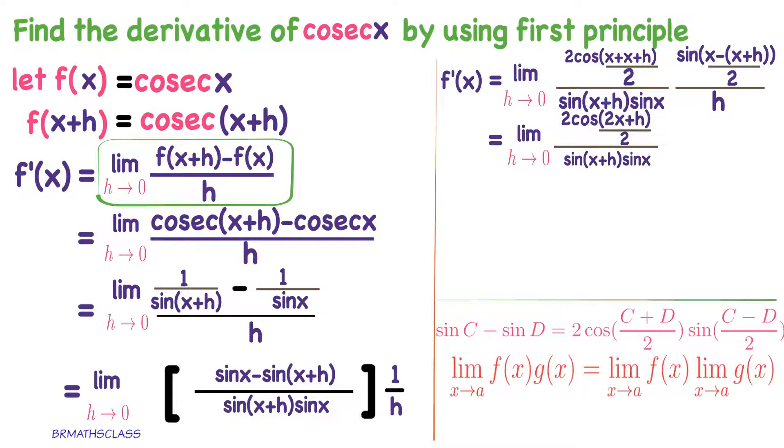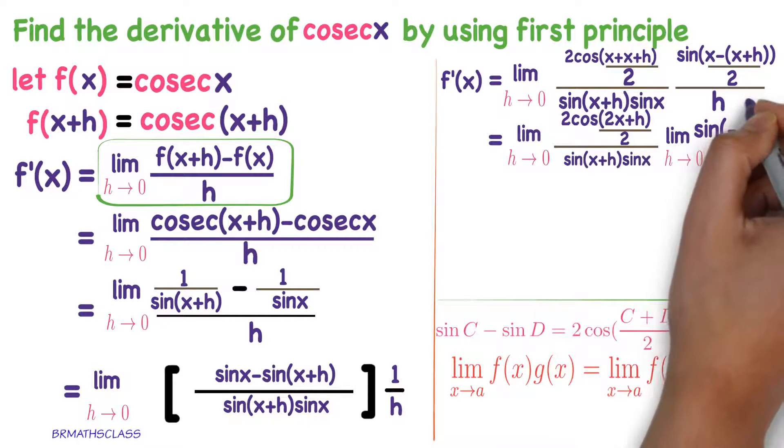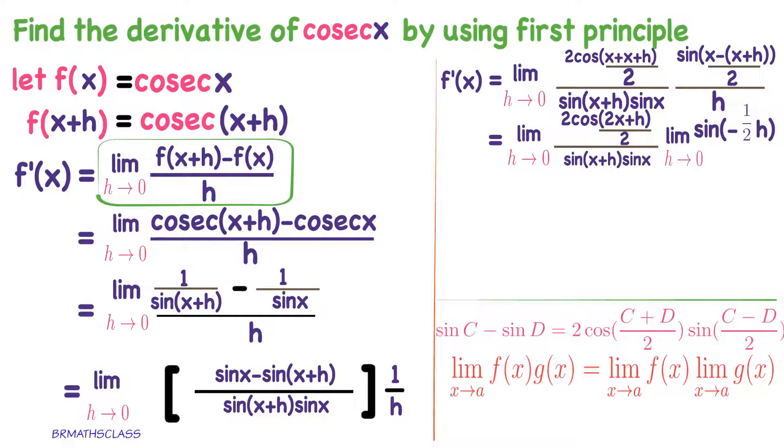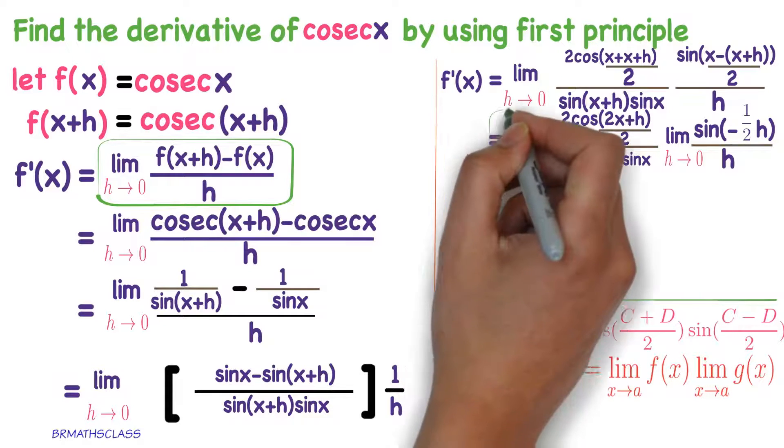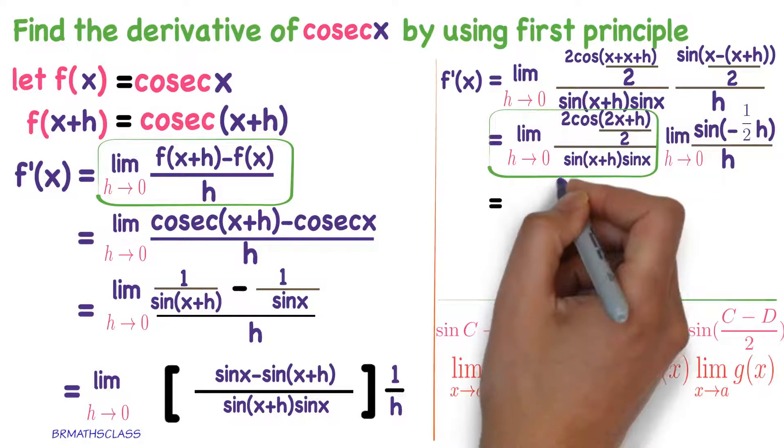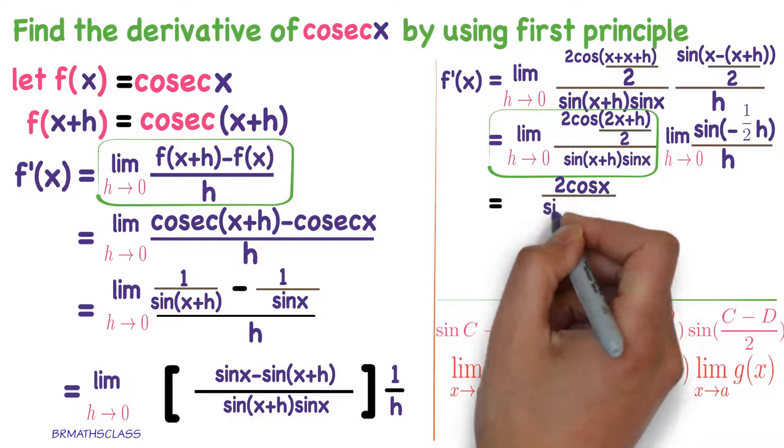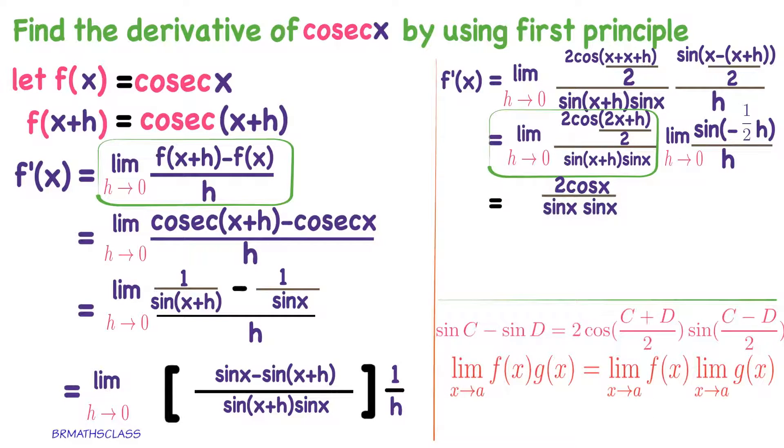Now, again, I will apply the limit to the g of x. Limit h tends to 0, sin of minus 1 by 2 into h divided by h. Now, I will apply limit to this part. Wherever h is there, there you put 0. You know how to find the limit. Put h is 0. 2 cos x will be remaining in the numerator. Denominator is sin x into sin x.